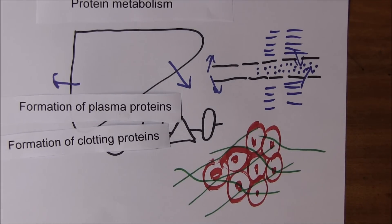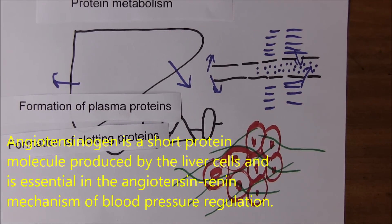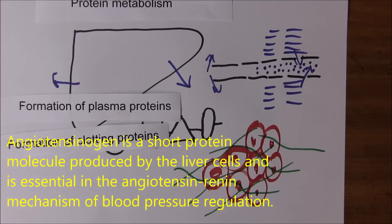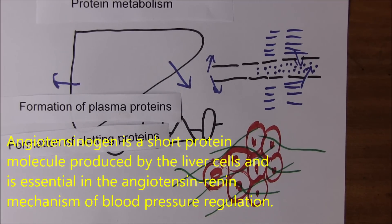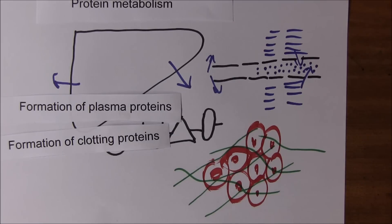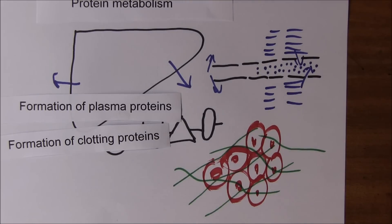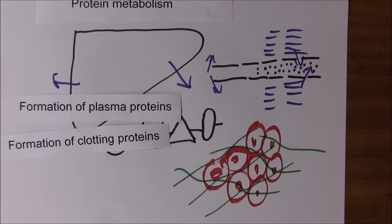Another protein that we've mentioned in previous videos is angiotensinogen. Part of the angiotensin-renin-aldosterone system for the regulation of blood pressure - the angiotensinogen when it's acted on by renin is converted into angiotensin.